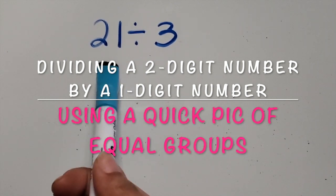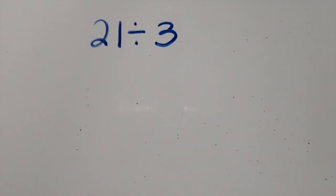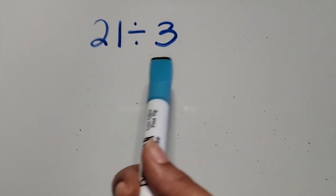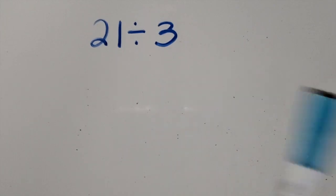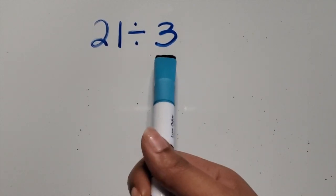We're going to divide a two-digit number by a one-digit number using a quick pick of equal groups. In this situation, we have 21 divided by 3. Since there is no context, we don't know if that 3 represents equal number of groups or the amount that goes into each of the equal groups. We are going to choose for this example that the 3 represents equal groups.